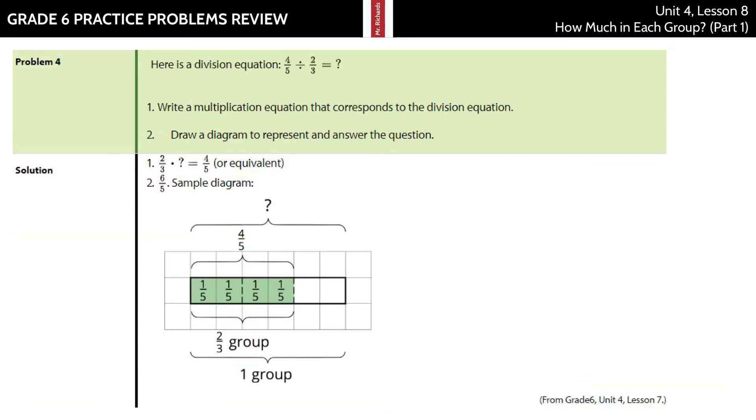Question four. Here's a division equation. This is review from Lesson 7. Four-fifths divided by two-thirds. Write a multiplication equation that corresponds to the division equation and draw a diagram that helps you represent. We'll just jump right here to the answer for the multiplication equation. Two-thirds times what is equal to four-fifths? So two-thirds times what is equal to four-fifths or something like that.